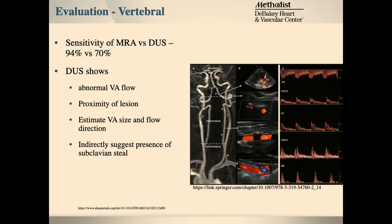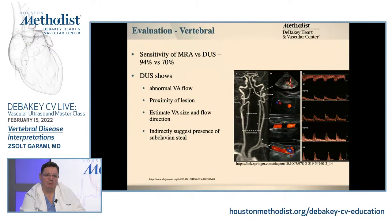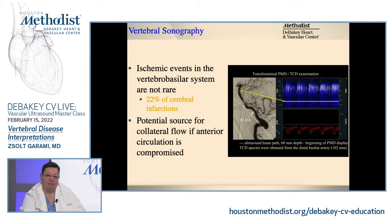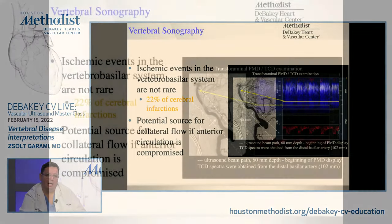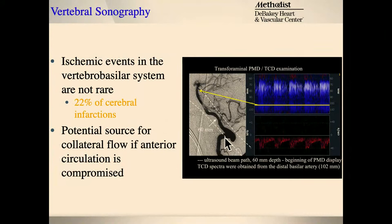We have certain set parameters when we measure velocities, but the idea is we want you to think about and speak the same Doppler language. We'll discuss different abnormal vertebral waveforms, and based on the waveforms we can predict proximal versus distal disease. One of my favorite images shows how a lateral projection angio compares to a TCD, because the TCD image shows the intracranial part — how the vertebral enters the skull — and you can change depth by listening to a different spectrum.